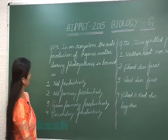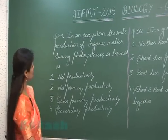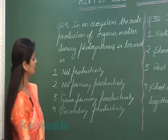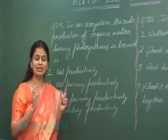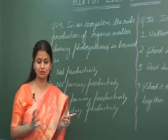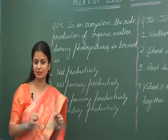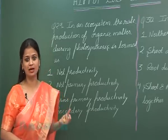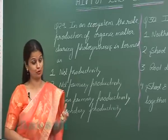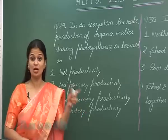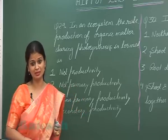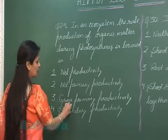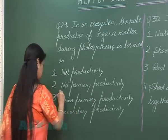Let's discuss question number 29: in an ecosystem, the rate of production of organic matter during photosynthesis is termed as what? It is the rate at which light energy is trapped by the plant and converted into chemical energy present in the carbon-carbon bonds of sugars — the rate at which organic matter is synthesized by the plant. This is known as gross primary productivity, and that is the right option here.